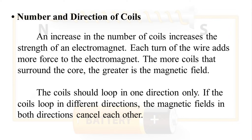Second factor: Number and direction of coils. An increase in the number of coils increases the strength of an electromagnet. Each turn of the wire adds more force to the electromagnet. The more coils that surround the core, the greater is the magnetic field. The coils should loop in one direction only. If the coils loop in different directions, the magnetic fields in both directions cancel each other.